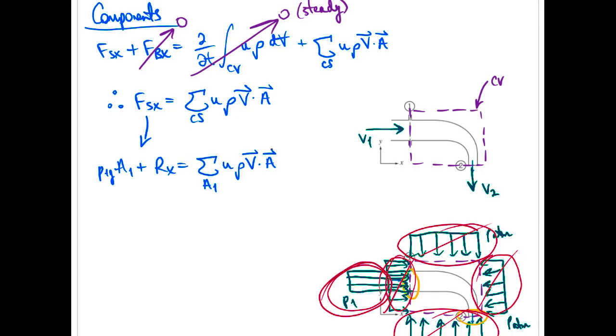Wrote p1 with a g there. That's gauge pressure. That reminds us that we've cancelled off the atmospheric pressure already so we just need the gauge pressure.